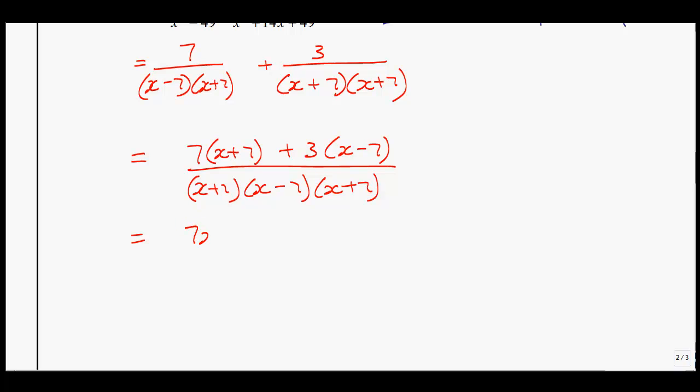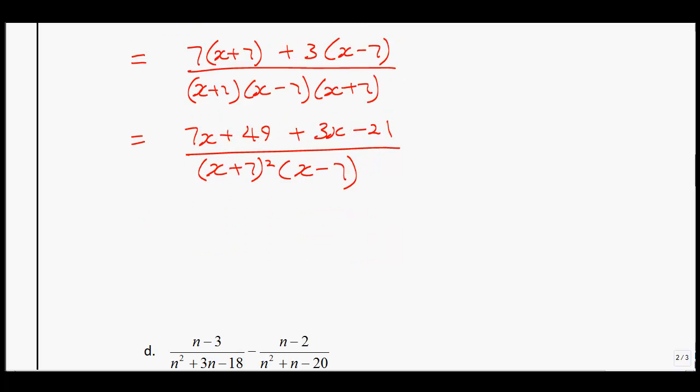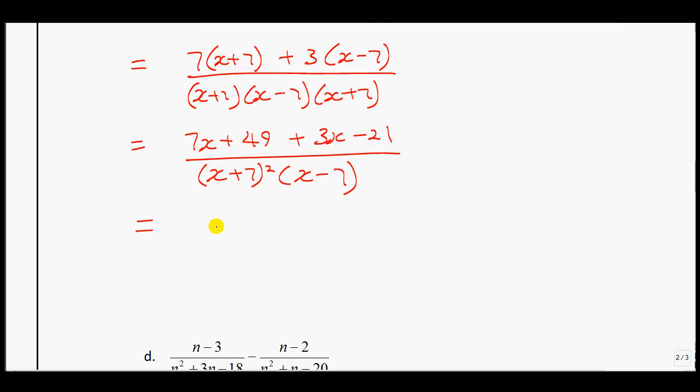Using the distributive property, I get 7x plus 49 plus 3x minus 21, all over, noticing I have 2 x plus 7s, I'm going to write as x plus 7 all squared, multiplied by x minus 7. Next I'll gather my like terms. When I gather my like terms, I have 10x, 49 minus 21 gives me plus 28, all over x plus 7 all squared, multiplied by x minus 7.